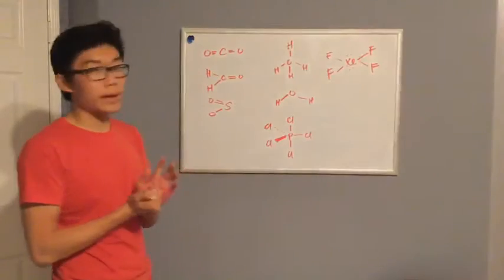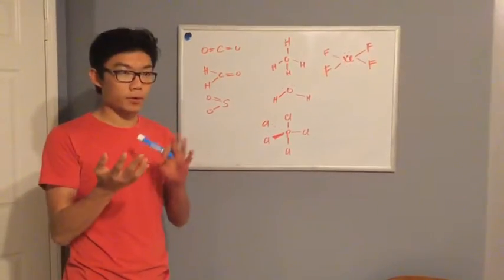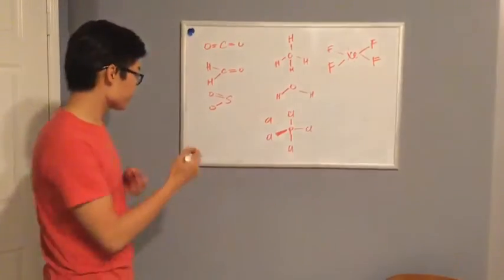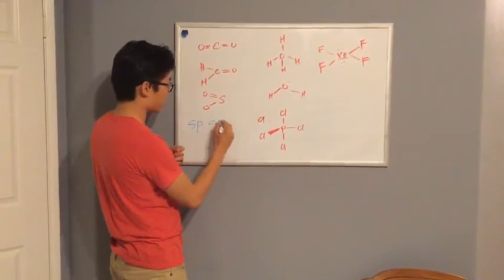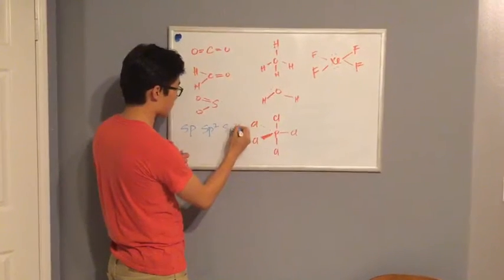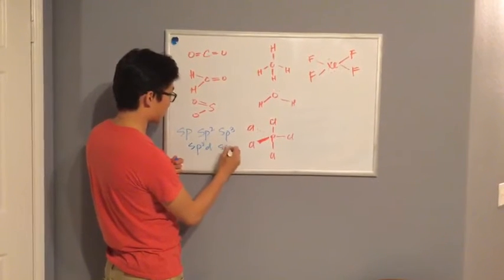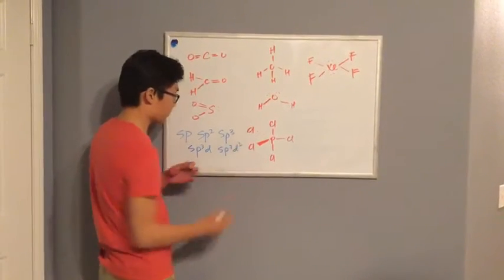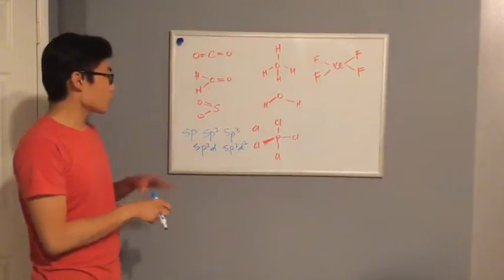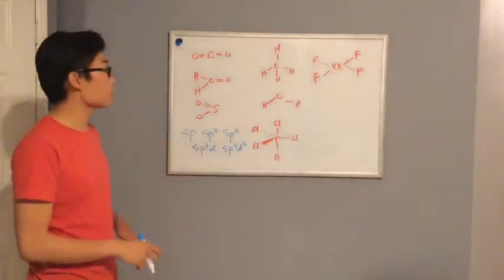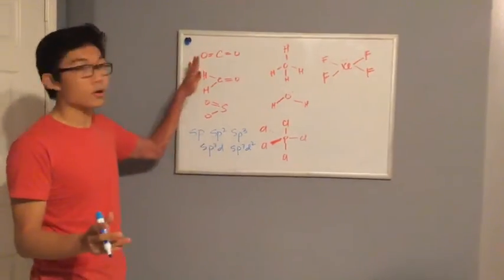So in order to look for hybridization, he talked about the four different types of hybridization. There's sp, there's sp2, sp3, sp3d, and sp3d2. Actually, there's five. So how we identify this? Quite easy if you draw the molecular model correctly.